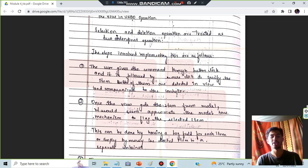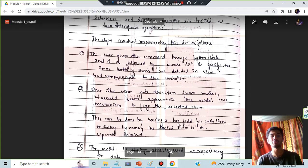Like that, it is okay: view, controller, and model. Once the view gets the stem from the model, it would seem appropriate for the model mechanism to flag the selected item.